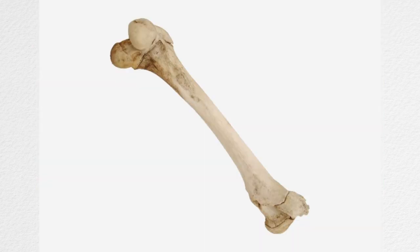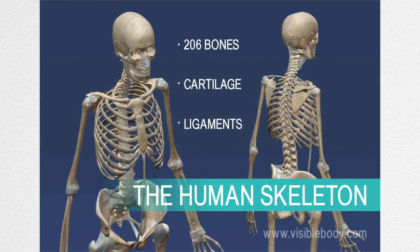Now that that is settled, let's move on to what the skeletal system consists of. The primary part of the skeletal system is, well, you probably guessed it, bones! Our bones help form our skeletons and there are approximately 206 bones in a fully developed adult skeleton.